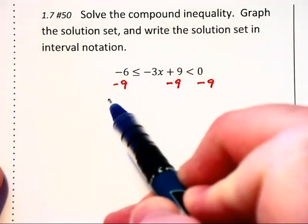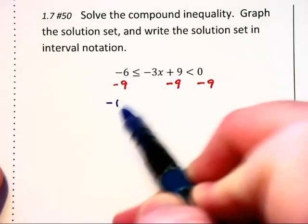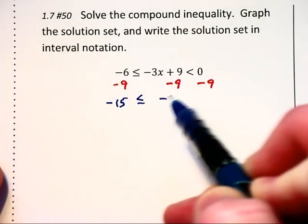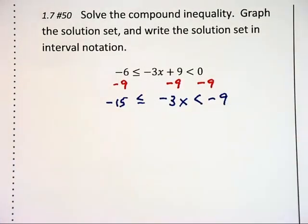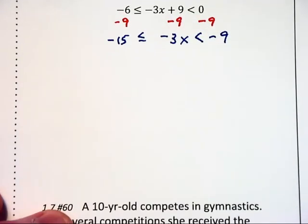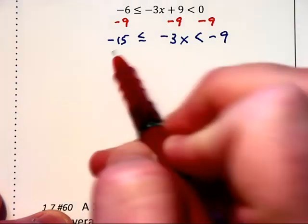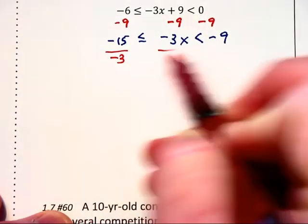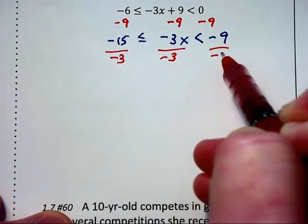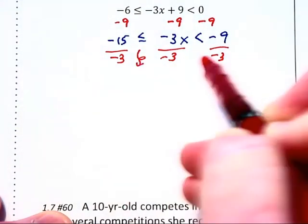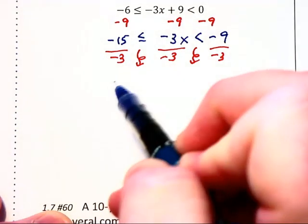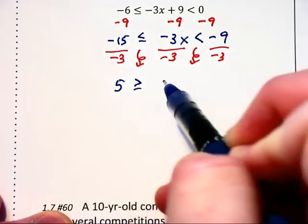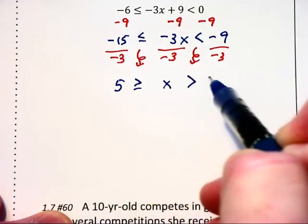This gives us negative 15 is less than or equal to negative 3x is less than negative 9. And then we want to divide all three parts by negative 3. But whenever we divide by negative, we need to change the direction of those inequalities.